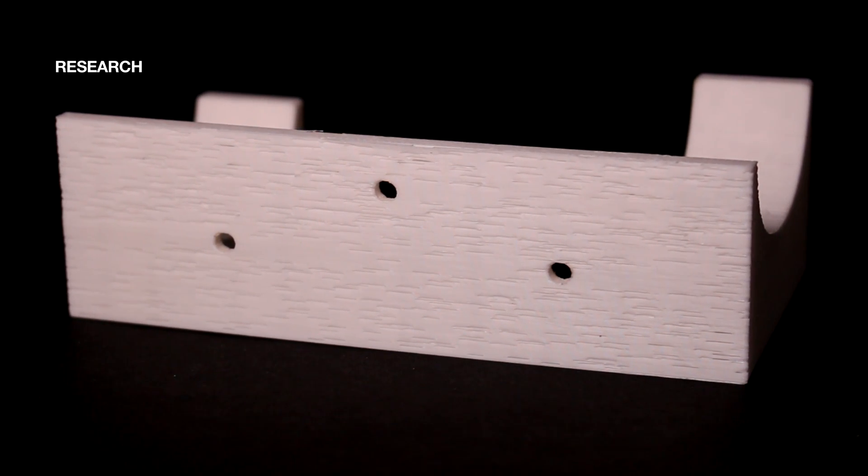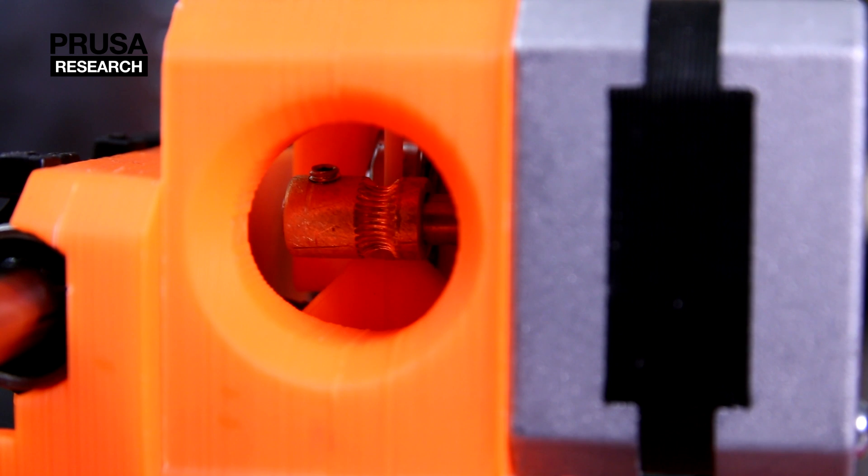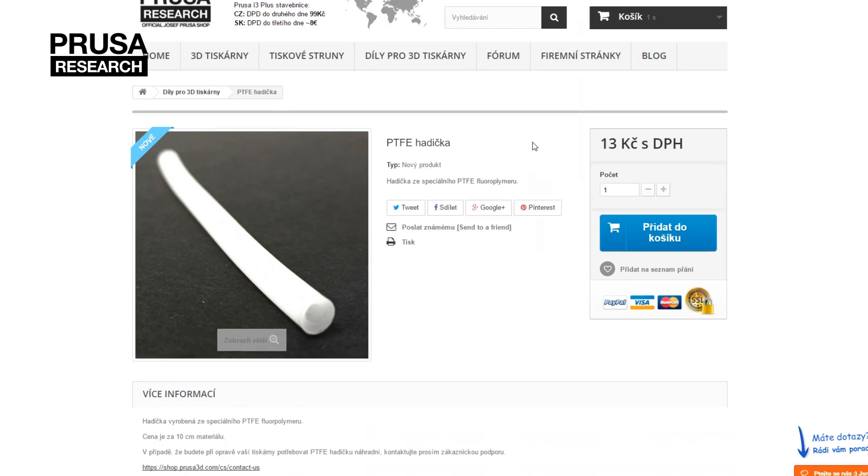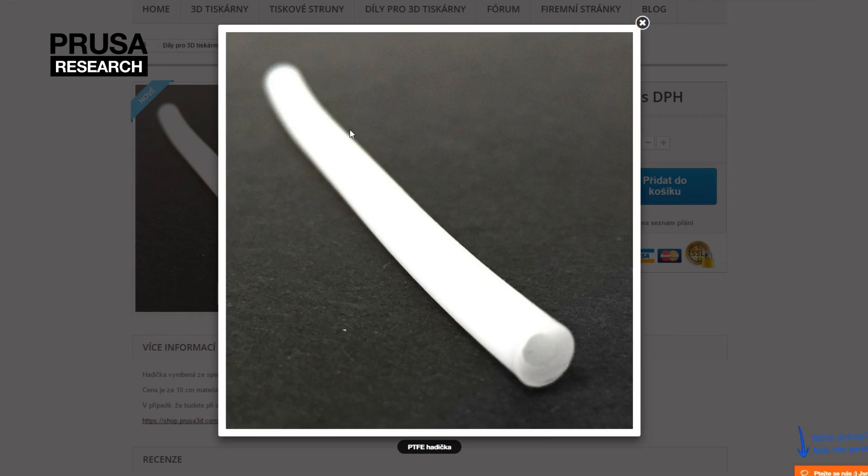If the printer extrudes the filament irregularly or the hopped pulley motor is skipping, the Teflon tube is probably choked with grime. You should replace it. The new Teflon tube can be ordered from our e-shop.